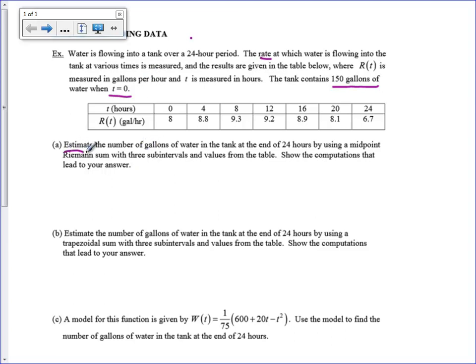Alright, so I'm going to estimate the number of gallons of water in the tank at the end of 24 hours by using a midpoint Riemann sum. We've done this before, so hopefully this is going to be complete review. We're going to do three sub-intervals. We're going from zero to 24. So we are going to have to go by 24 minus zero. This is B minus A over N. It told us three sub-intervals. We're going to go by eights.